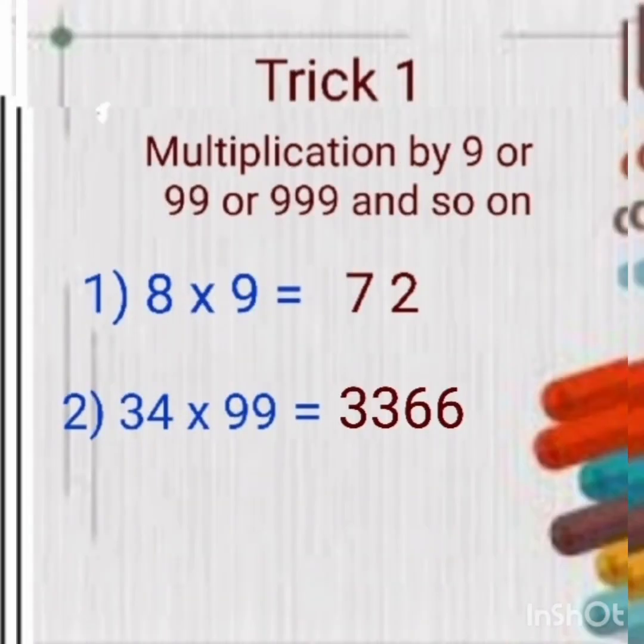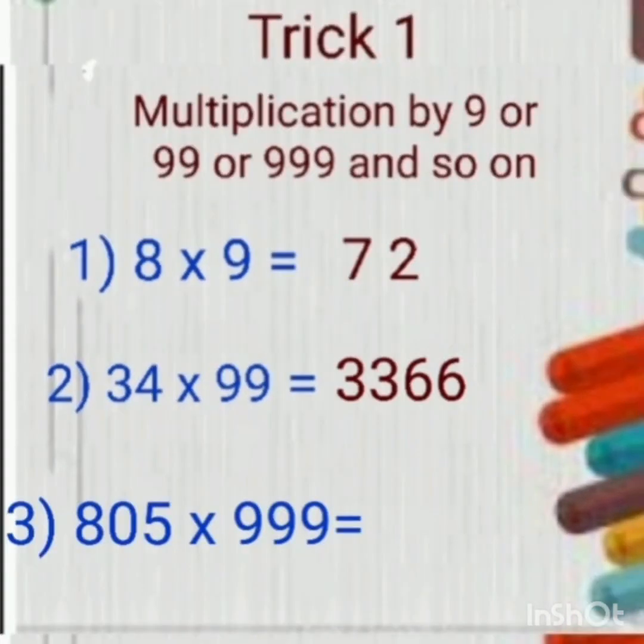One more example. 805 into 999. Multiplying 3 digit number by 3 digit, and getting answer within 5 seconds. How?